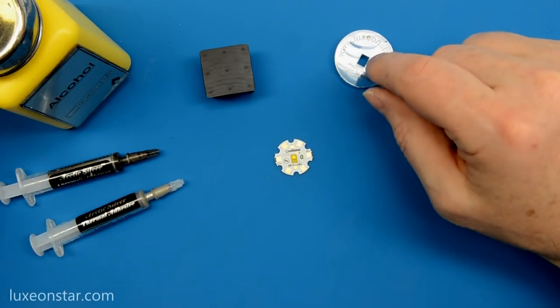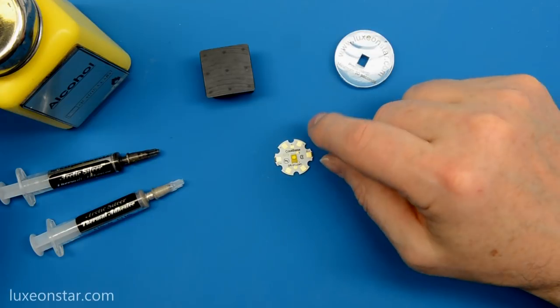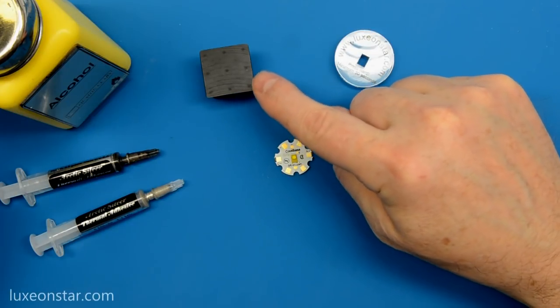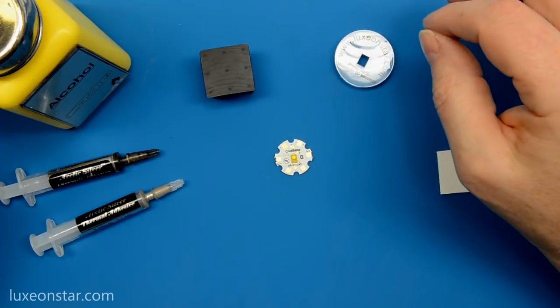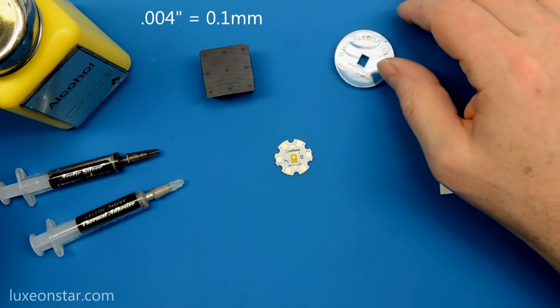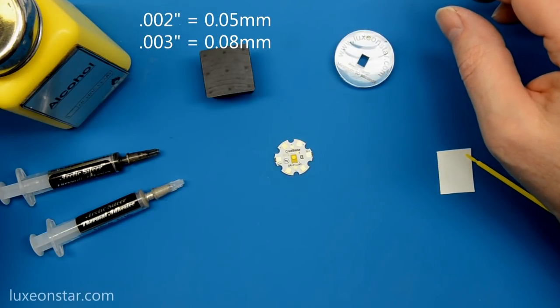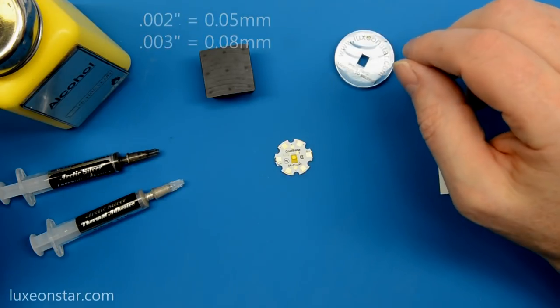The key to creating a thermally efficient bond is to create as thin a bond line as possible between the LED and the top of the heat sink. At most, you don't want the heat epoxy layer to be more than four thousandths of an inch thick, with two to three thousandths of an inch thick easily achievable if this is done correctly.